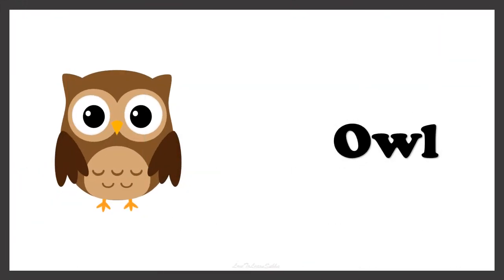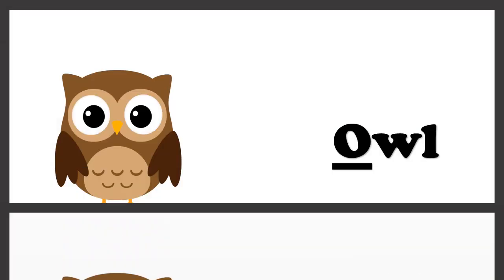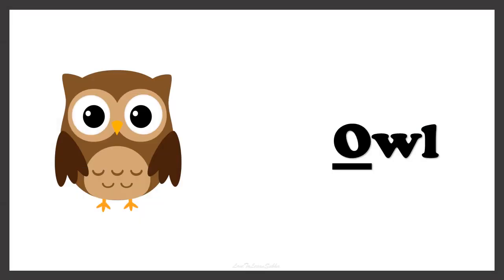Now here we have the picture of OWL. You have to find the article that comes before the word OWL. The word OWL starts with the vowel O, so we must use the article AN. So we call it AN OWL.